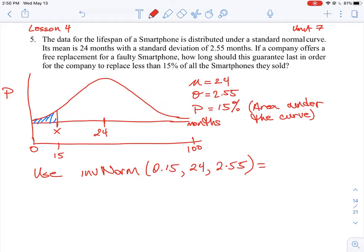So if you do all that in one step, you will get an answer of 21, and that means that is the number of months that the warranty should be advertised by the company so that they don't replace more than 15% of their product. So the inverse norm function will automatically do this question, you can do it in just one quick step.